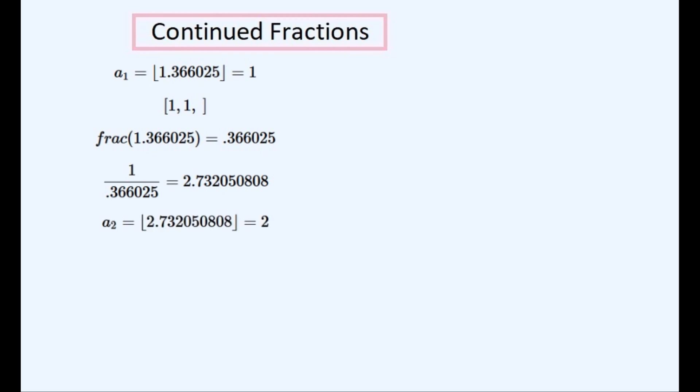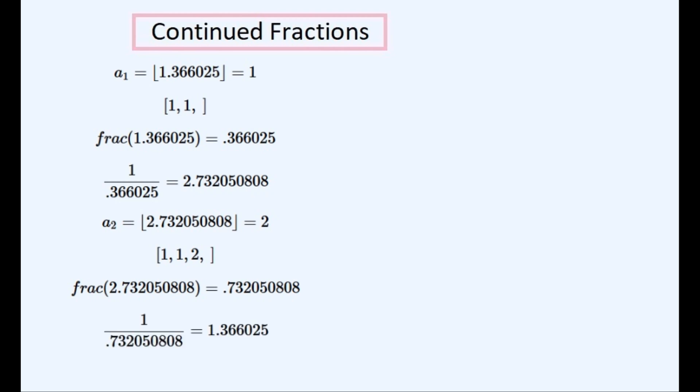And then get the floor of this new real number, and then insert this new number onto the list. Then get the frac of this real number, and then get the reciprocal of this number, then get the floor of this number, and add this number onto the list. And we can go on doing this forever to get an infinitely long list of numbers. And so now to use this more realistic notation to have a bird's eye view of what is happening.